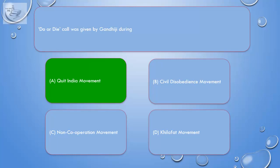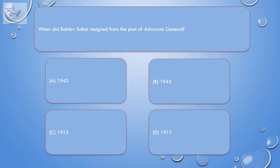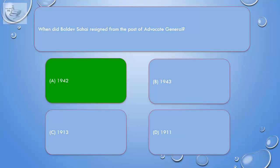Question: When did Baldev Sahai resign from the post of Advocate General? A. 1942, B. 1943, C. 1913, D. 1911. Correct answer is A: 1942.